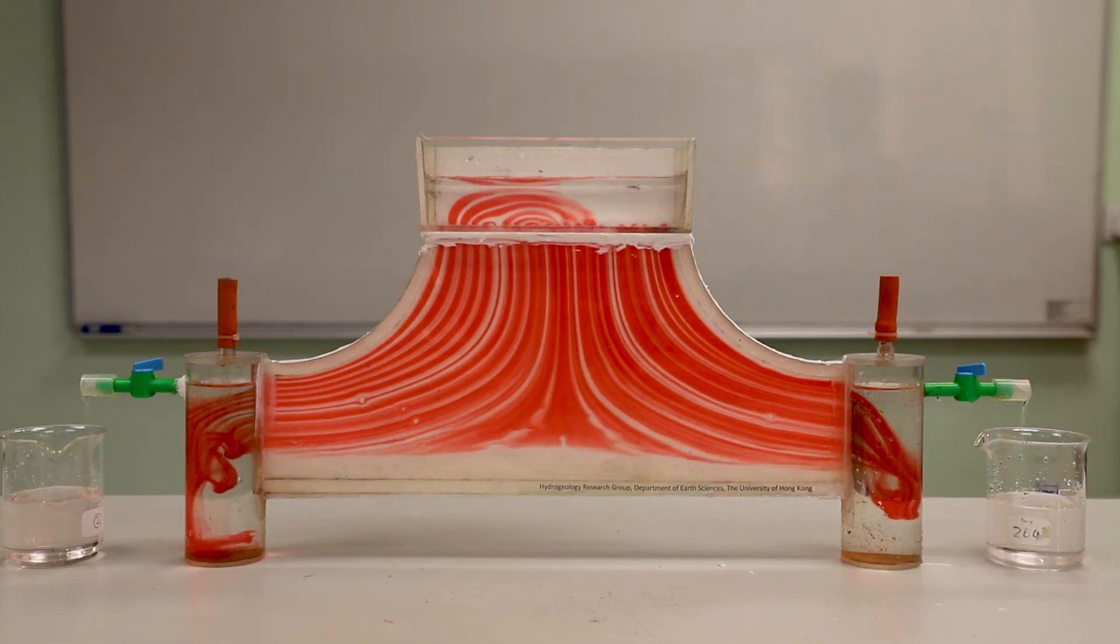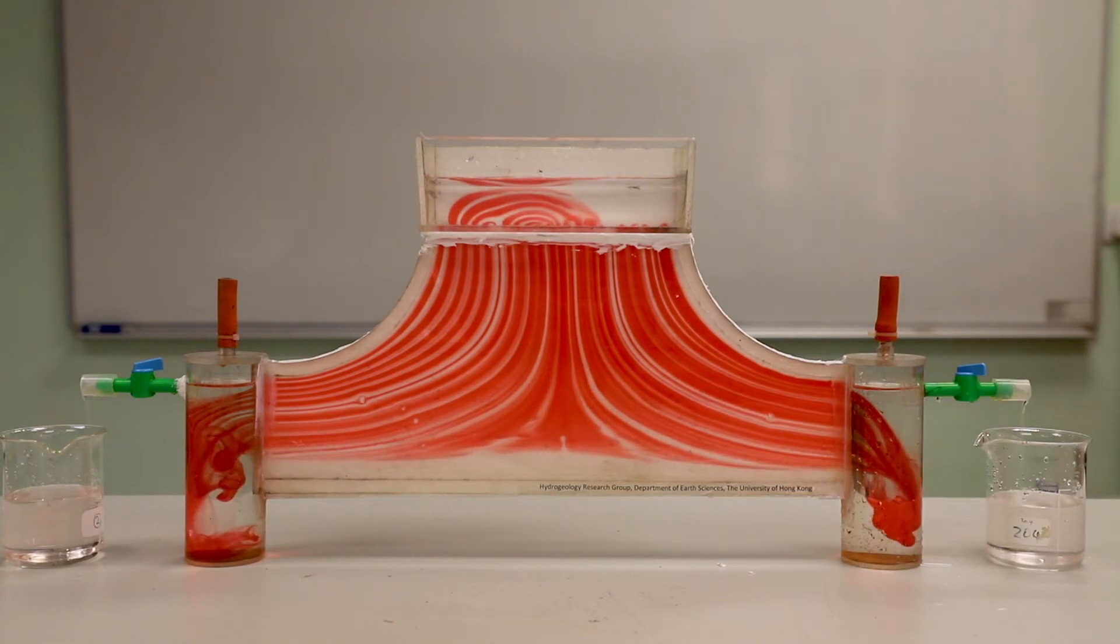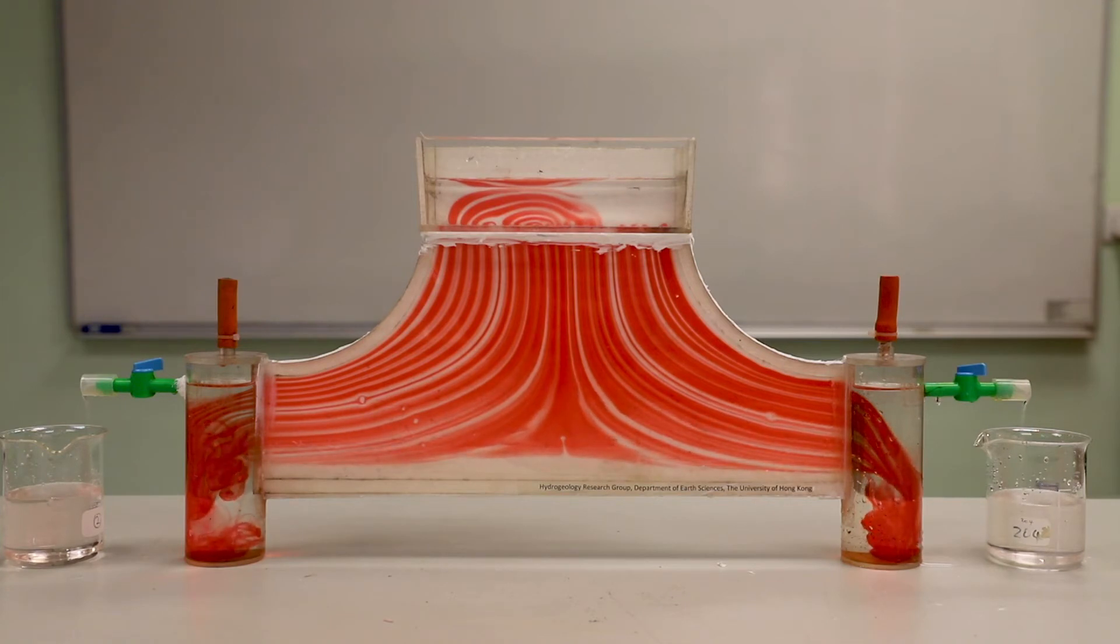The dye shows the path of water flow from where it recharges at the surface to where it exits at the lake. We can see that the valve on the left is allowing slightly more outflow than the right because the dye advances more rapidly on the left.